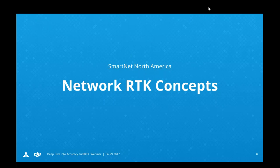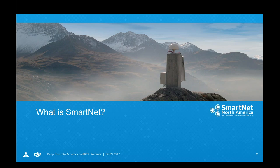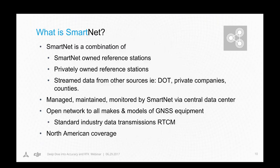My name is Tyler Collier. I'm with SmartNet North America — the largest network service provider for RTK solutions in North America. We also have a presence globally with our sister networks in Europe and Australia. Today we're going to talk about how our networks can be used to supplant the need for heavy, dense ground control in use with drones, and also give a brief introduction about what RTK is in general. SmartNet is a combination of privately owned GPS reference stations and data we stream from other sources such as DOTs, private companies, and counties. We manage and monitor all this GPS data coming into the central data facility and are open to all makes and models of GNSS equipment, using RTCM as our standard message format.